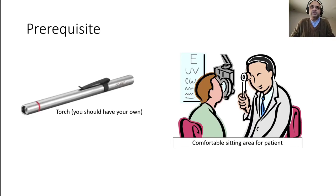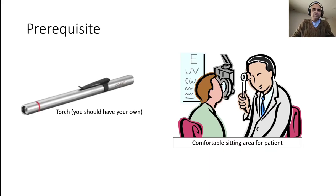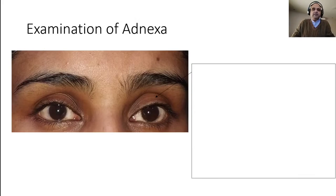The special prerequisites for this test are a torch and a comfortable area to examine your patient. If you can alter the room illumination that is even better, but generally you won't need to. Any comfortable room with a working pen torch is sufficient. You should have your own pen torch — it's cheaper than a stethoscope or reflex hammer. Try to get one with an incandescent bulb rather than an LED bulb, as it provides more comfortable light for the patient.